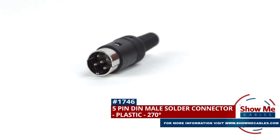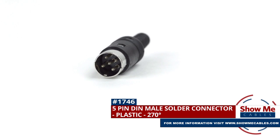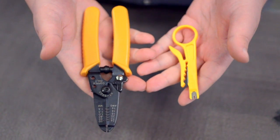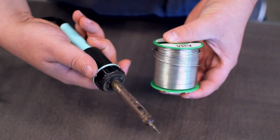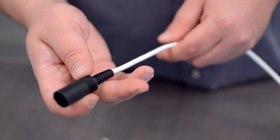This is the 5-pin DIN male solder connector. To install, you will need the following items: low voltage cable, wire strippers, solder and soldering iron, and the DIN connector. Start by inserting the plastic boot over the jacket.